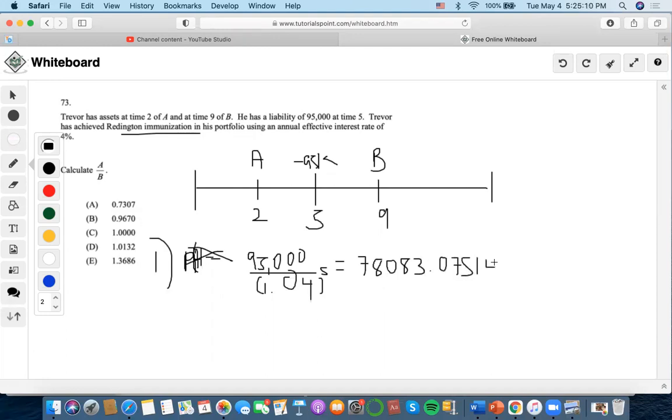Now we're going to want to make the durations equal to each other, right? So duration of liability, we have asset A is 2, so we're going to make that times X consisting of the part of the present value, plus 9 times 1 minus X, equals the duration of the liability. So we already got the present value part done.